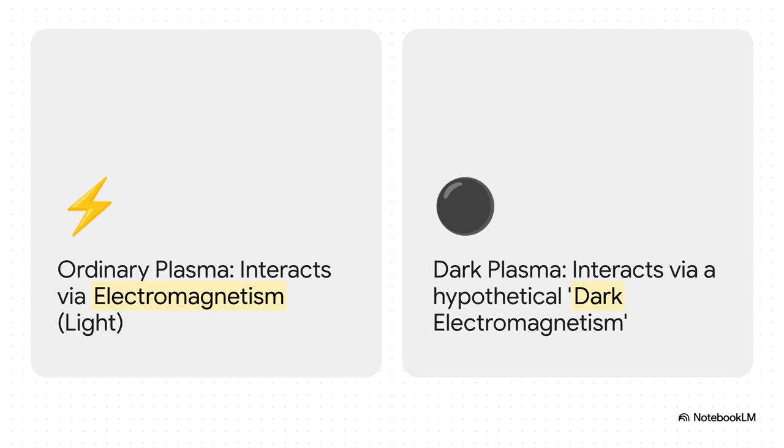And this brings us to the fundamental split between them. Ordinary plasma, as we said, is ruled by electromagnetism, the force carried by photons, which are particles of light. But dark plasma? Theorists think it might be governed by its own private force, a kind of dark electromagnetism that only affects other dark matter particles. It's like a hidden universe with its own secret set of rules.